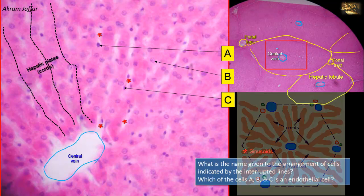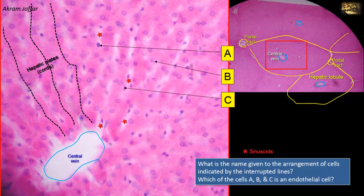Endothelial cells line the sinusoids and are the majority of the lining cells. Endothelium, by definition, is the simple squamous epithelium that lines all blood vessels — capillaries, veins, arterioles, arteries, and even lymphatics. Although the cell shape cannot be seen in this stain, it is reflected in the nucleus, which is flattened. So cell C, with its flattened nucleus, represents an endothelial cell.